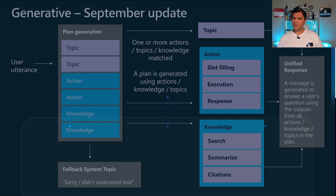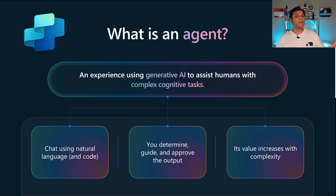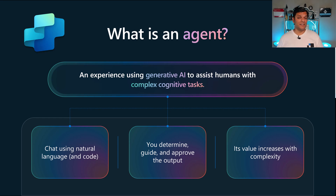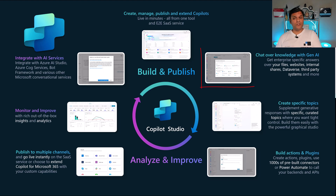Just to make sure we're on the same page about the Copilot Studio agent — this is what it is. It truly is what we used to call the Copilot Studio custom copilot. It is still an experience with generative AI to assist humans with complex cognitive tasks. It will use natural language, give you determination and guidance over the output, and its value increases with complexity. The overall concept is still the same as how we work with Copilot Studio building custom copilots. The name has changed, but there is so much more generative AI being built in the back end, and that is truly going to take it to the next level.